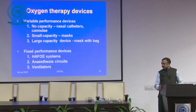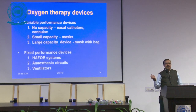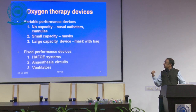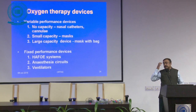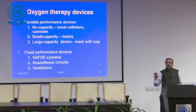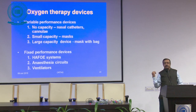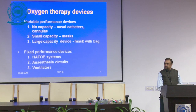Various devices are available to deliver oxygen from the source to the patient — whether in a ward or even at home. There are two broad types: fixed performance devices, which deliver a precise concentration such as 28% or 30%, and variable performance devices, which deliver a range roughly between 40 to 50% depending on the patient's breathing pattern.